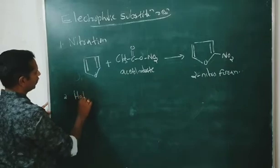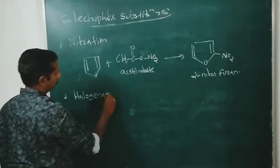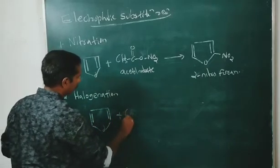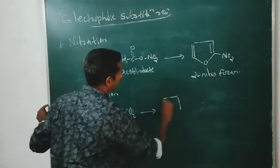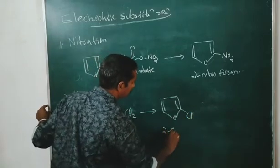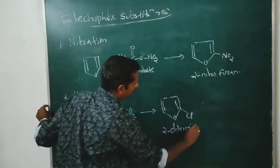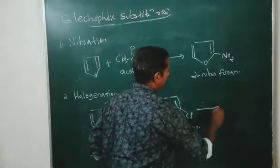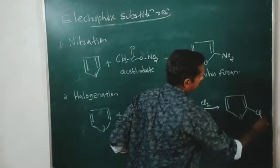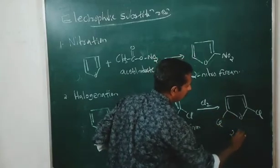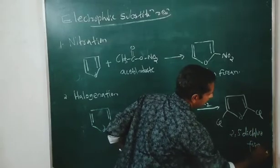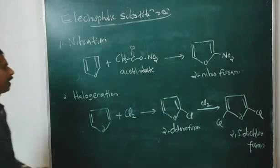Second electrophilic substitution: halogenation. When furan is treated with chlorine, we first get 2-chlorofuran. When this reacts again with chlorine, we get 2,5-dichlorofuran.